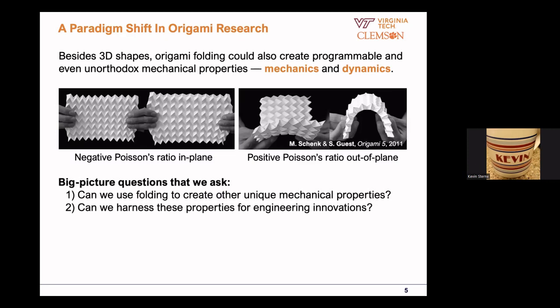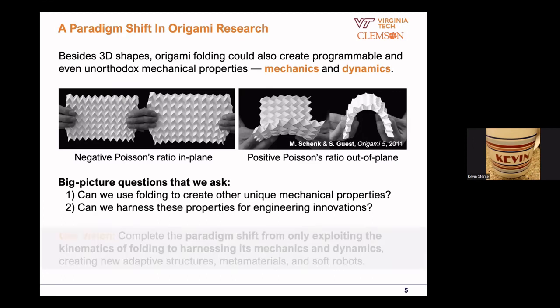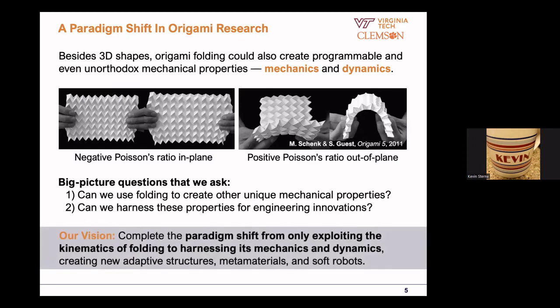So this Miura-ori has a very peculiar combination of negative Poisson's ratio in-plane and positive Poisson's ratio out of the plane, all because of this beautiful tessellation of creases and surfaces. This study was published in 2011 — more than 10 years ago — and that became the inspiration of my research. The vision of our research over the past six years is to complete a paradigm shift from just using the kinematics of origami folding to also harnessing the dynamics and mechanics to make new structures, metamaterials, and soft robots.